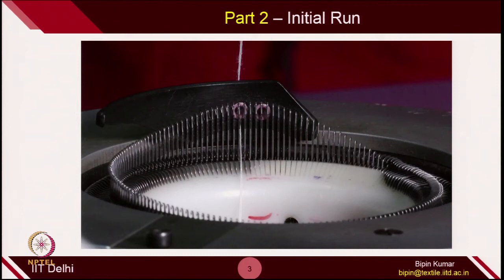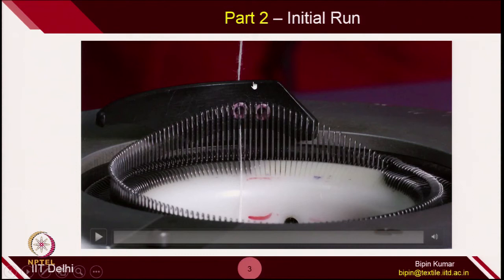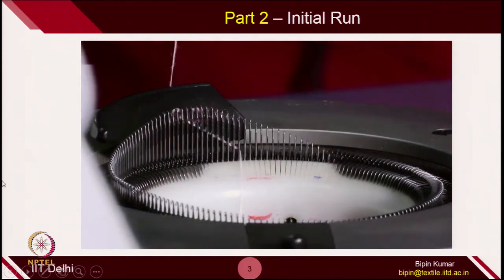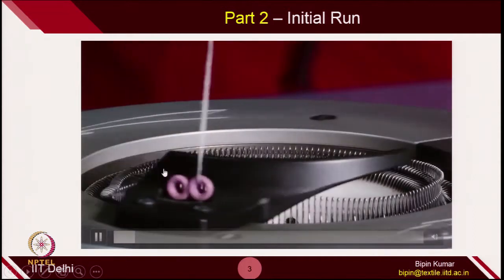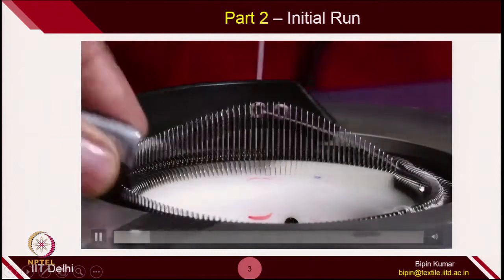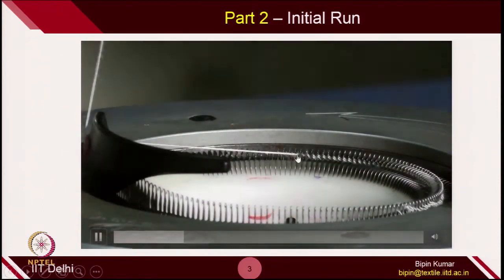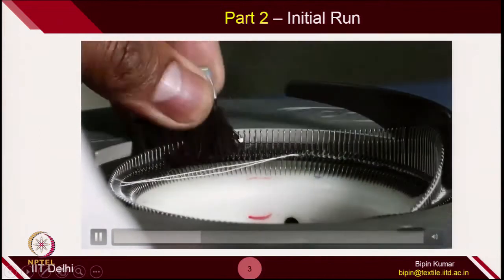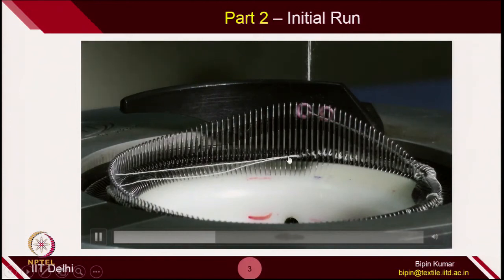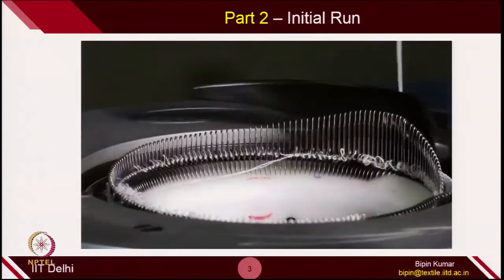Let's see the initial run. The initial run is a little bit difficult because to catch the yarn, the latch of the needle needs to be open. There was no old loop, so it is difficult to predict whether all the latches of the needles will be open across the circumference. We need some kind of brush to open the latch for all the needles so they can keep catching the yarn during rotation. When you run the machine, the yarn will be supplied to all needles, but not all needles will catch the yarn because the latch is not open. We must make sure the latch remains open whenever yarn is present. Naturally, we are opening the latch manually, and those needles whose latch is open will catch the yarn. We keep doing this process until all the needles catch the yarn.